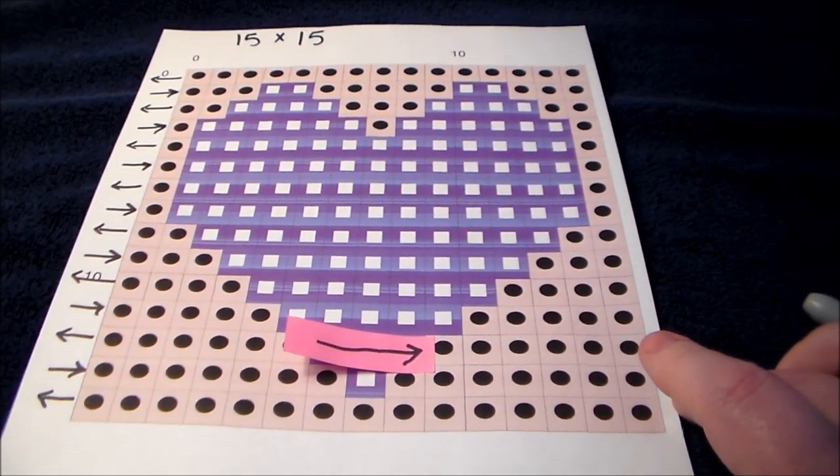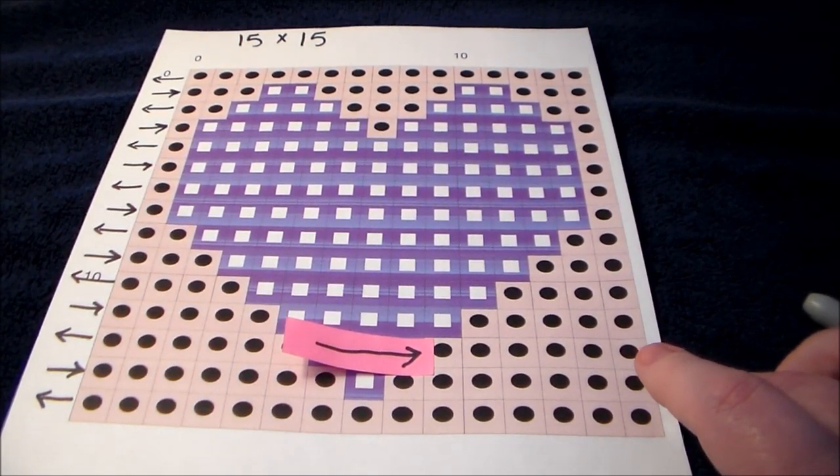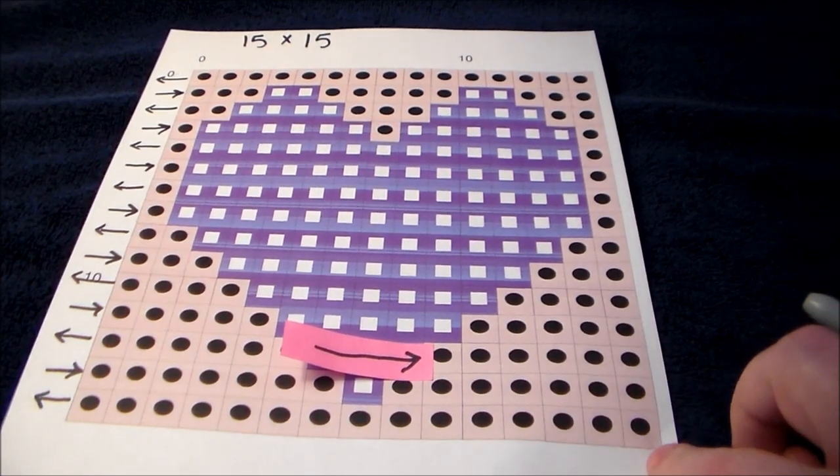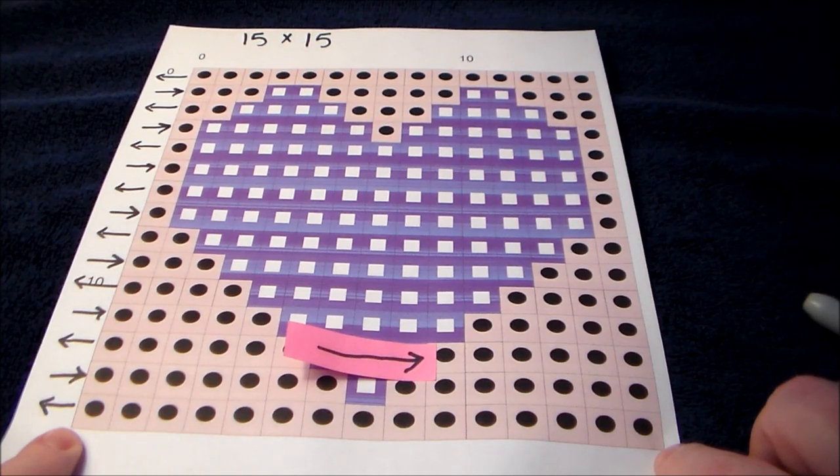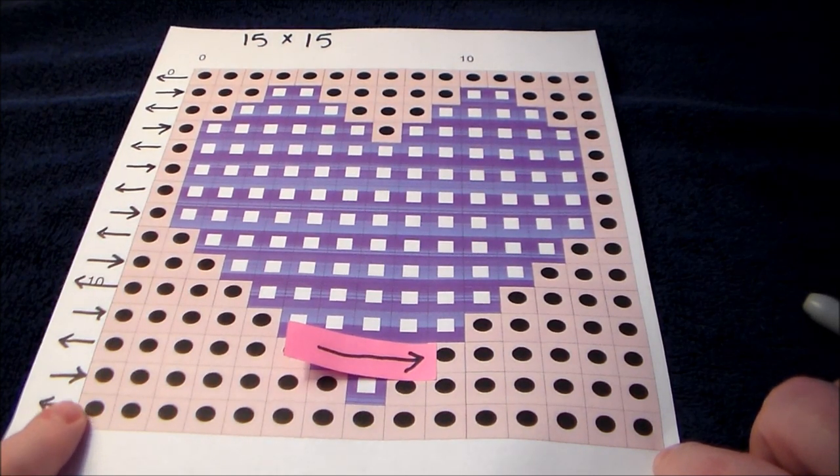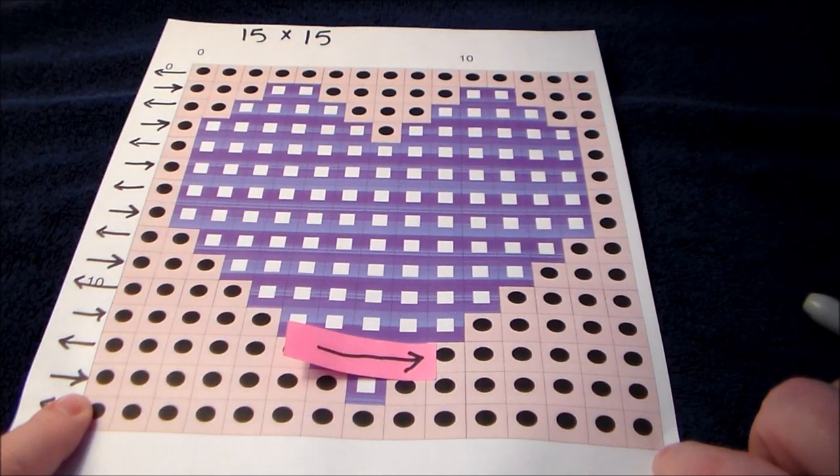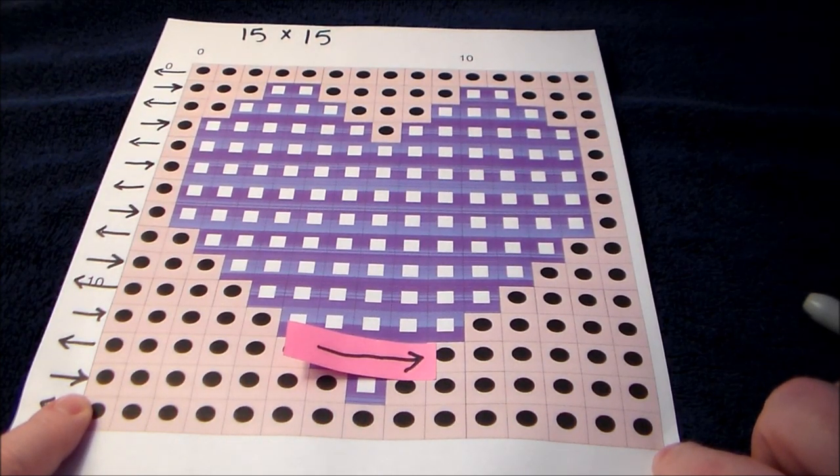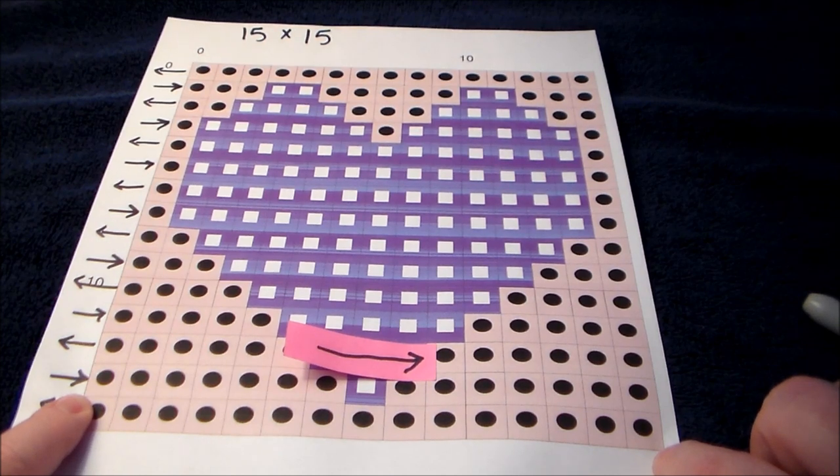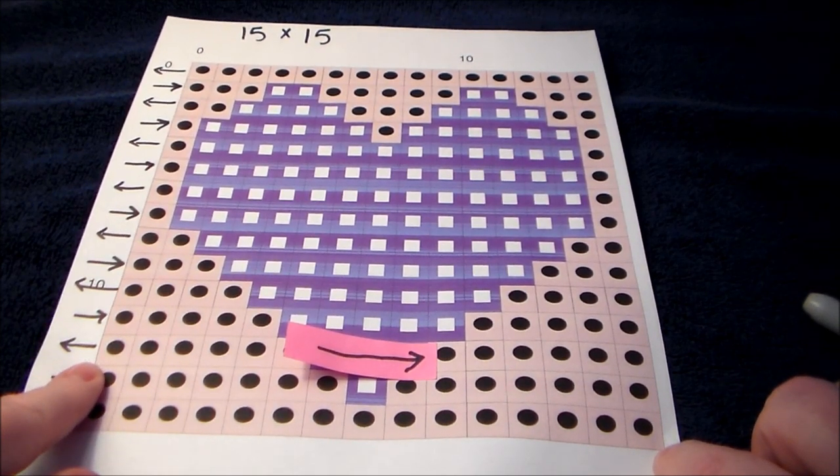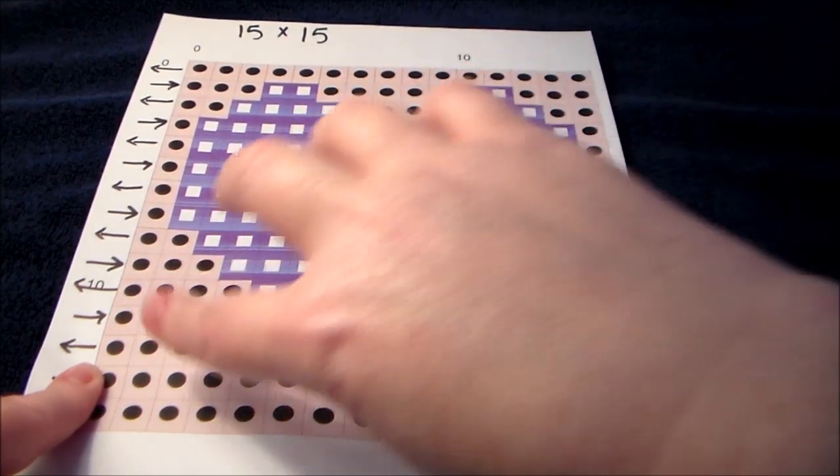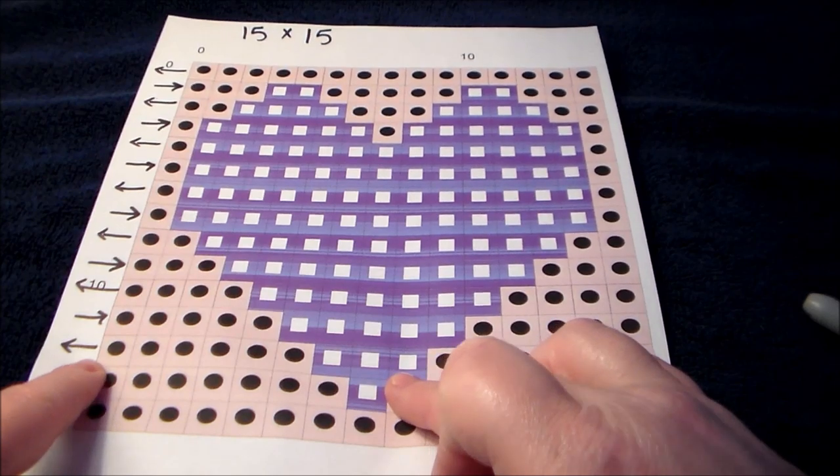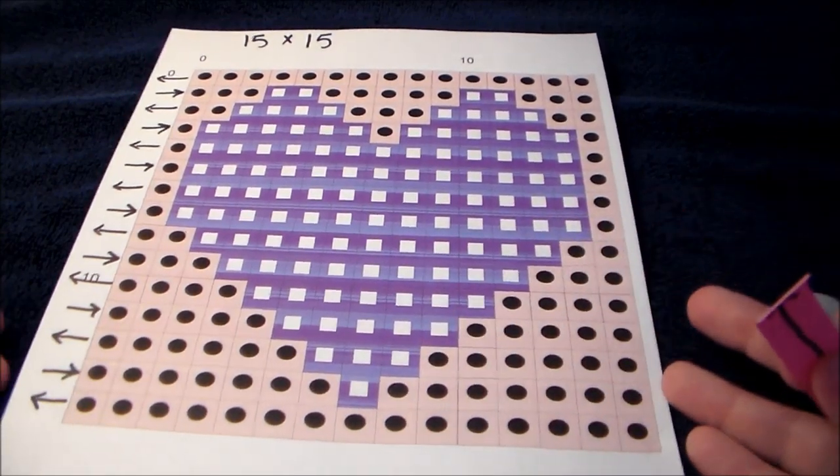I have seen people break it down row by row and they literally will say okay row one working right to left has 15 stitches in pink chain one turn. Row two working left to right has seven pink stitches one purple and seven pink stitches chain and turn. And then row three working right to left has six pink stitches, three purple, and six more pink chain and turn. And I have seen people do this.